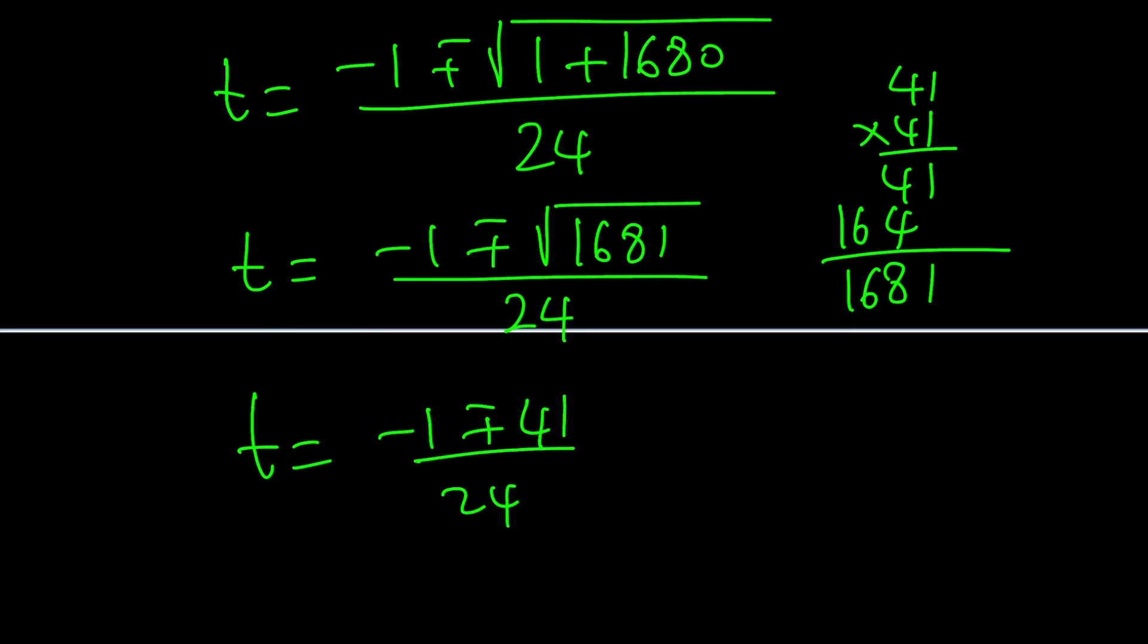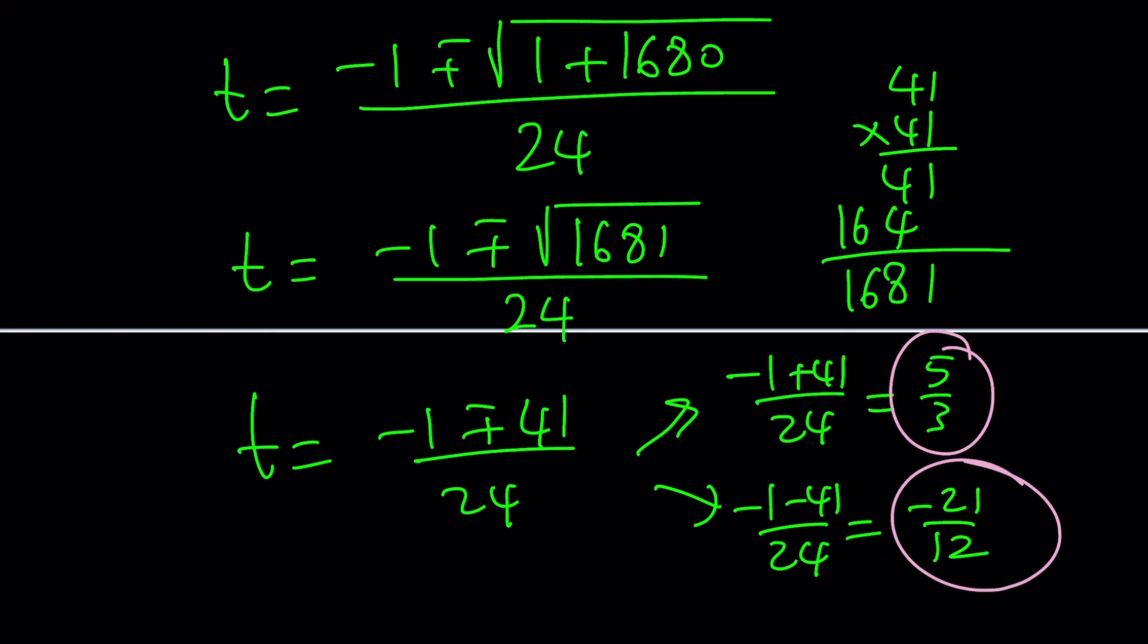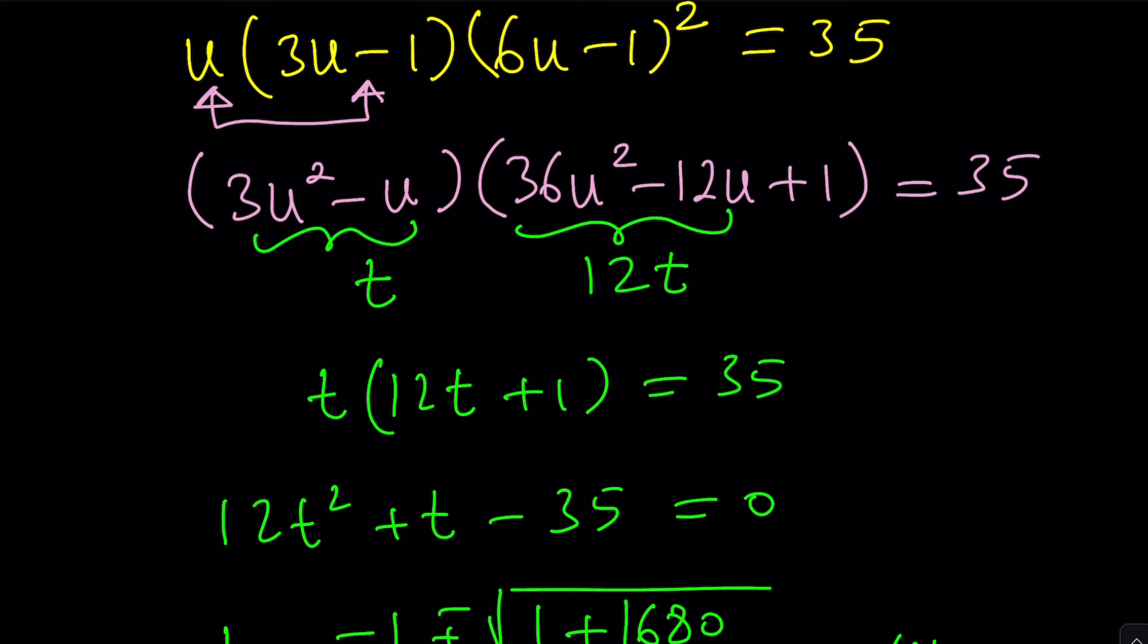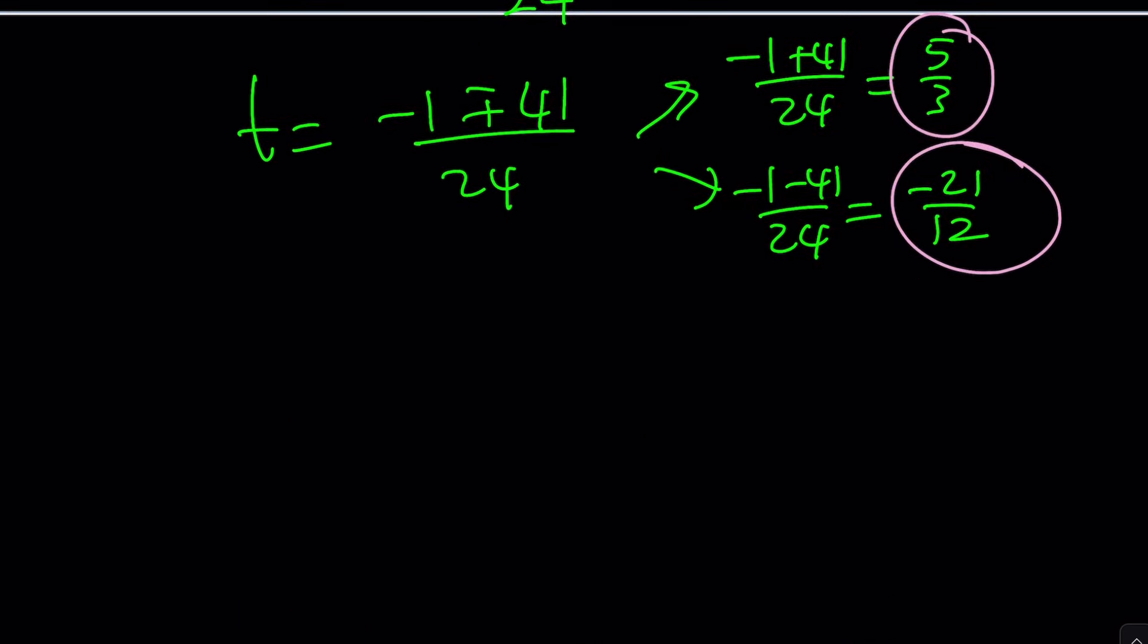So, this will become negative 1 plus minus 41 divided by 24. And if you separate this, you're going to get negative 1 plus 41 divided by 24. That'll be 40 divided by 24. If you can divide everything by 8, you're going to get 5/3 from here. And the other solution is going to give us negative 1 minus 41. I don't think that's going to be that nice. But negative 42, and you're going to simplify that into -21/12. Good enough. All right. Now, we've got these two solutions, but these are the t values. From the t values, you need to go to the u values. And then from the u values, you need to get to the x values.